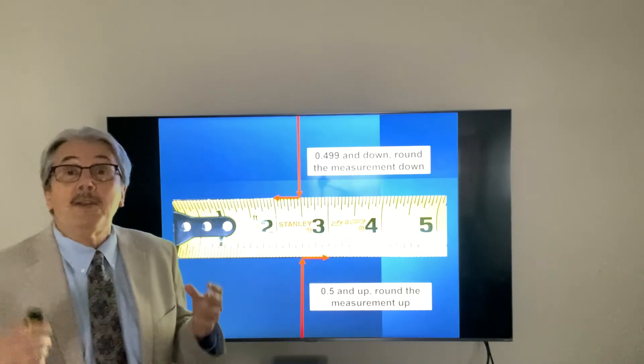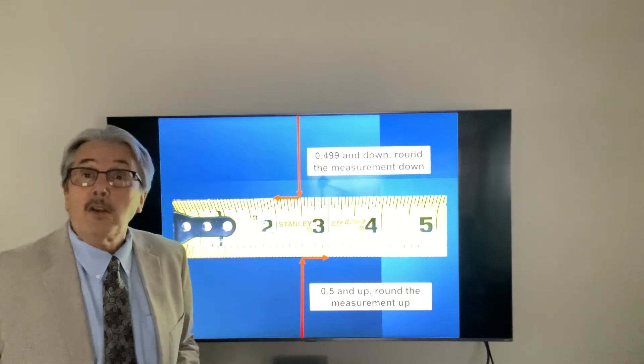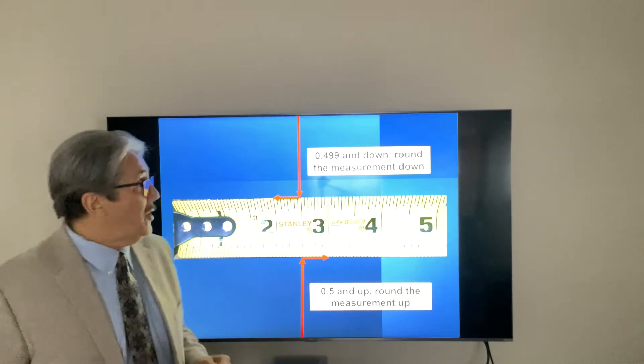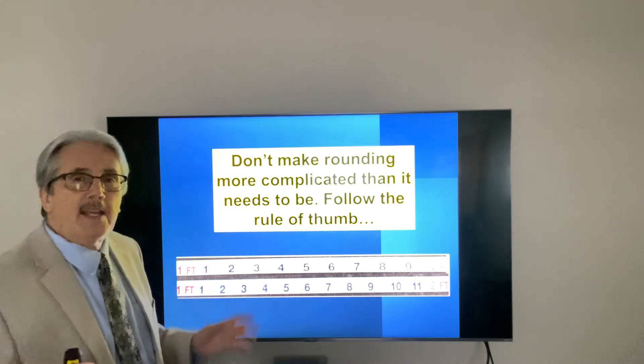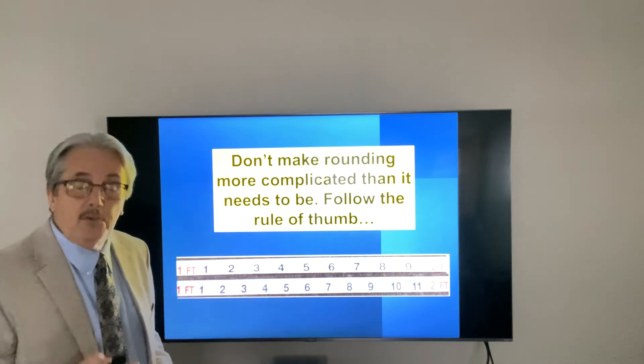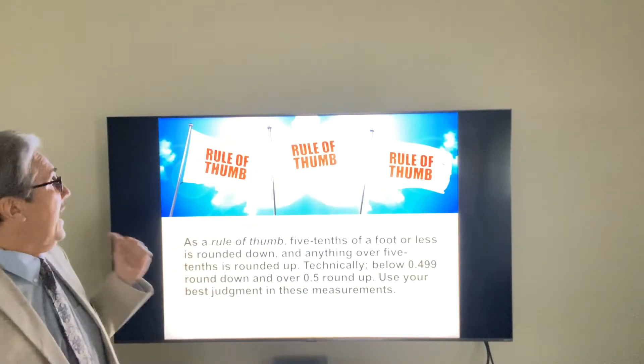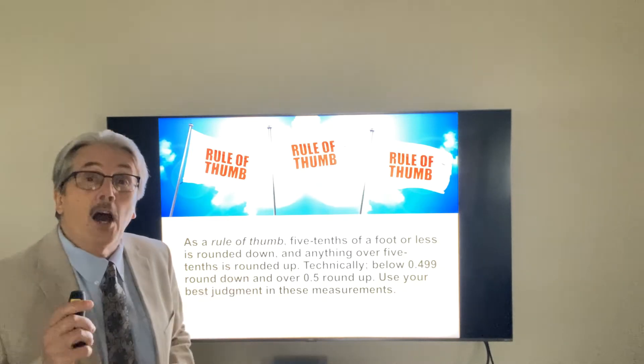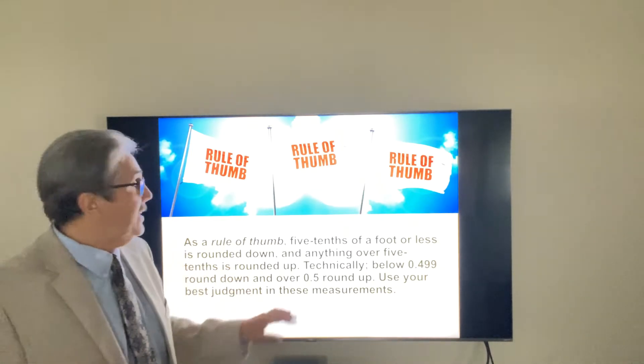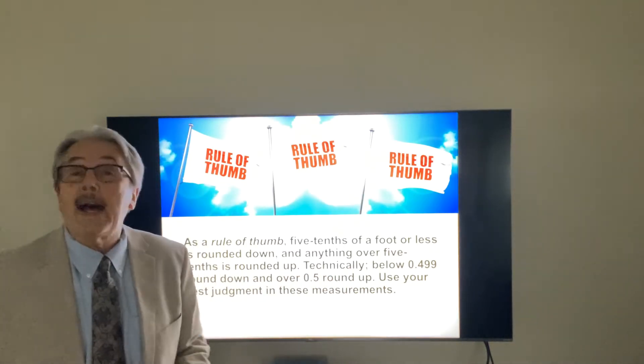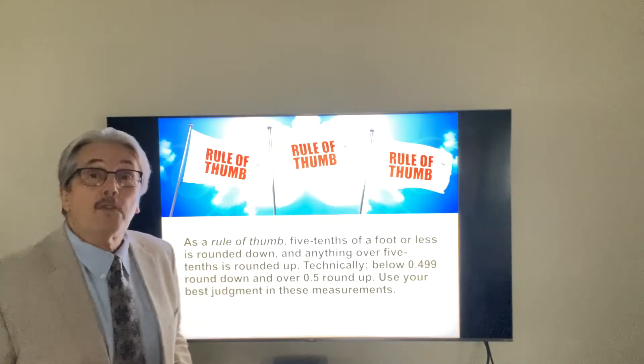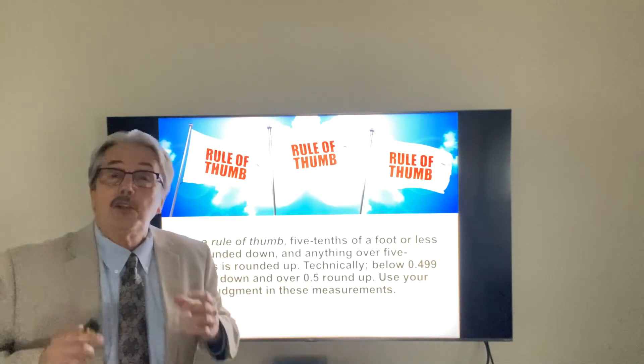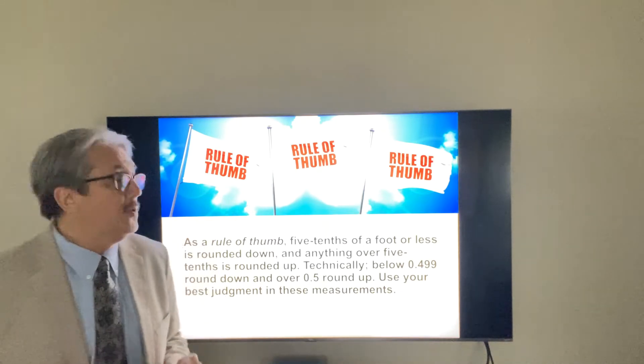And the rules of thumb, they're really simple. If it's below the half-inch mark, you're going to round it down. If it's above that half-inch mark or tenth or whatever it is, round it up. Don't try to make them more complicated than they are, whether it's inches or tenths of a foot, just use what we call the rule of thumb. Anything five-tenths of a foot or less is rounded down, and anything over five-tenths of a foot is rounded up. Now, technically, it's below 0.499 you round that measurement down, and anything over 0.5 or five-tenths or half a foot, round it up. Just use your best judgment in these things and do what you've been doing the same way.